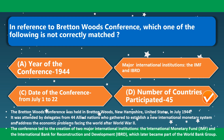In reference to the Bretton Woods Conference, which one of the following is not correctly matched? Year of the conference — 1944 — correct. Major international institutions — IMF and IBRD — correct. Date of the conference — July 1 to 22 — correct. Number of countries participated — forty-five — this is not correct, because the number of countries that participated was forty-four.